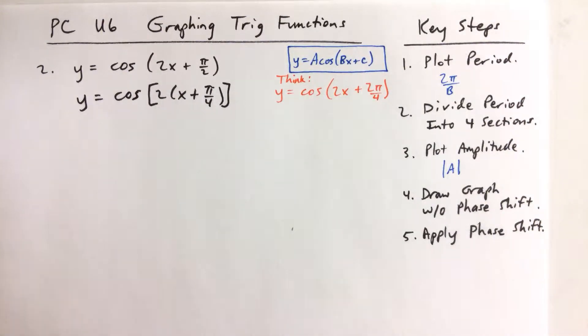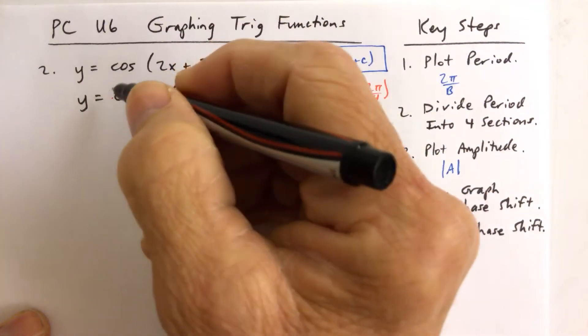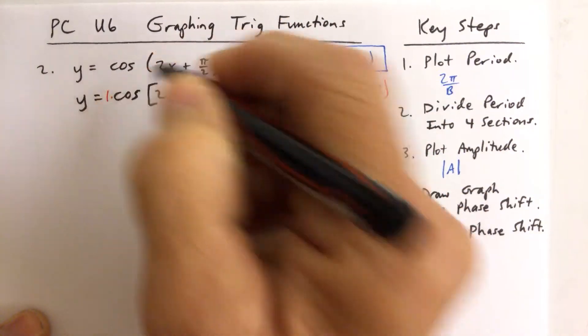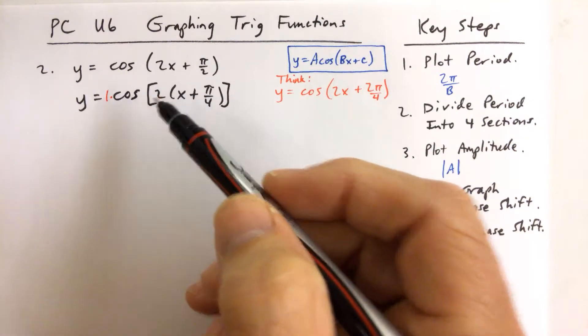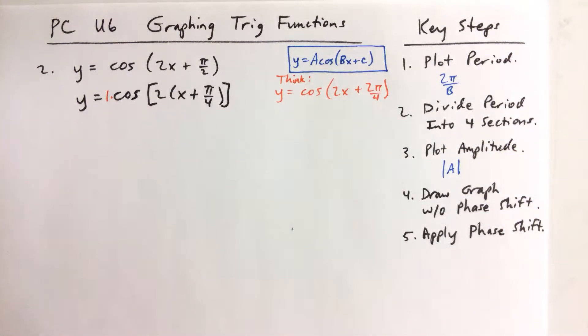So now that I have that, I realize that I've got an a. A is 1 because that's the number in front of the cosine, so it's 1 times that. The b is 2, and so that's what we're going to use to find our period.